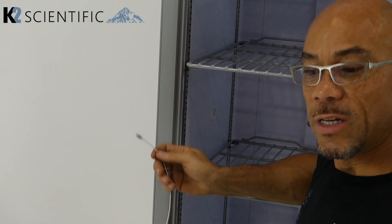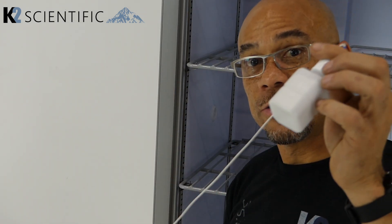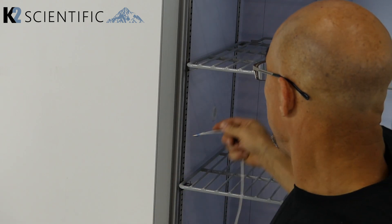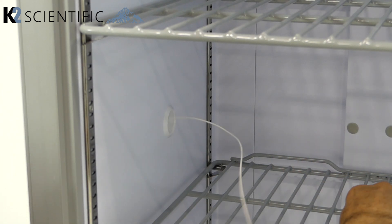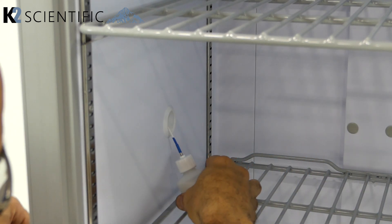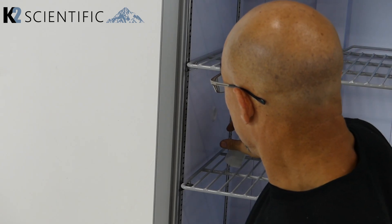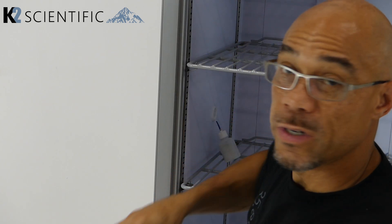The first step is to take the cable that is attached to the probe and insert it through the port or through the data logger. You can then place the probe on one of the shelves.